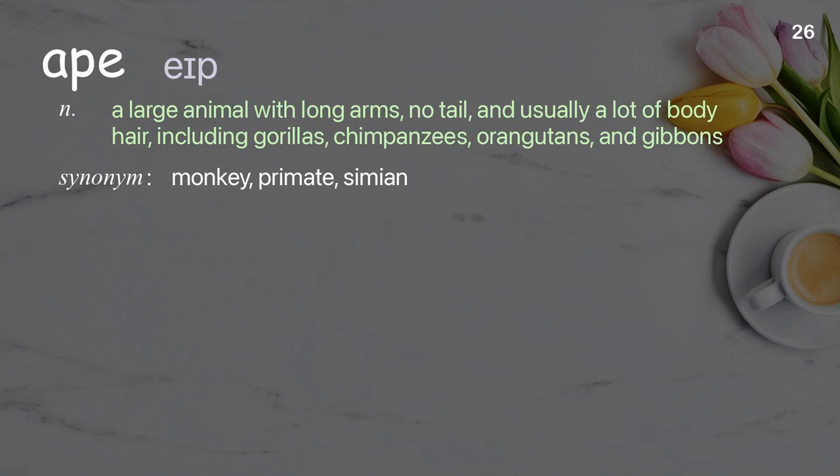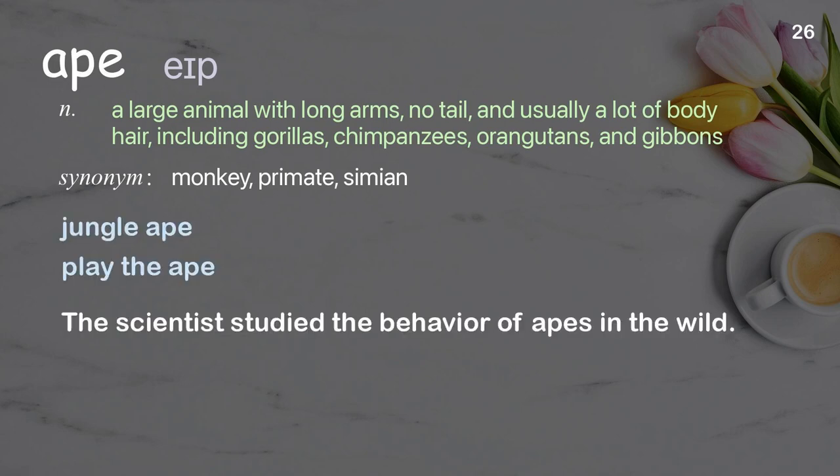Ape: a large animal with long arms, no tail, and usually a lot of body hair, including gorillas, chimpanzees, orangutans, and gibbons. Examples: jungle ape, play the ape. The scientist studied the behavior of apes in the wild.